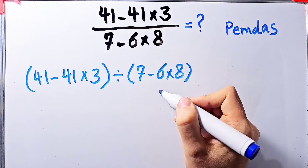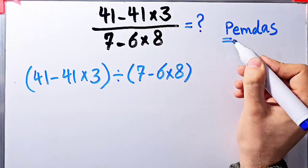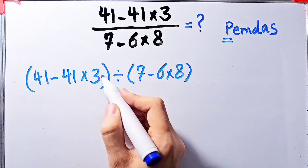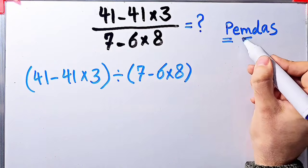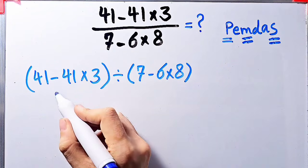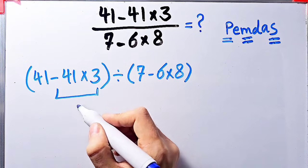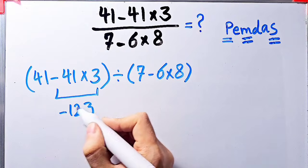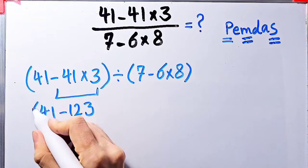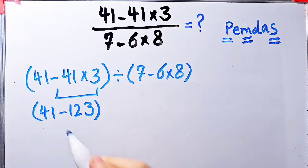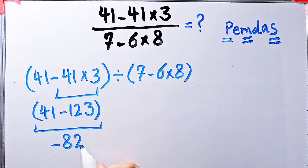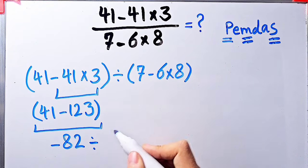According to the PEMDAS rule, first we simplify the parentheses. Inside the first parentheses, we have subtraction and multiplication. First, we do this multiplication because multiplication has higher priority than subtraction. Negative 41 times 3 equals negative 123. Now we have 41 minus 123, which equals negative 82.